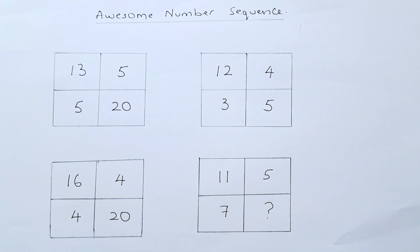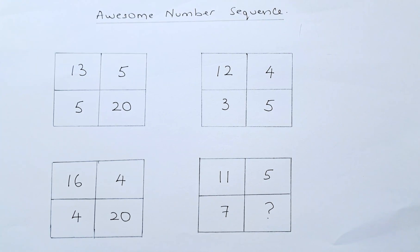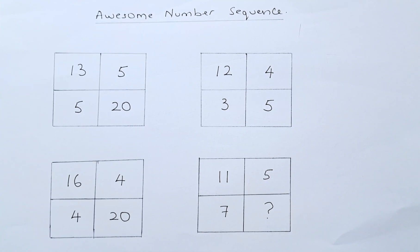If you look at the numbers—13, 5, 5, 20; 12, 4, 3, 5; 16, 4, 4, 20; and 11, 5, 7, question mark—they seem to have no relationship at all.